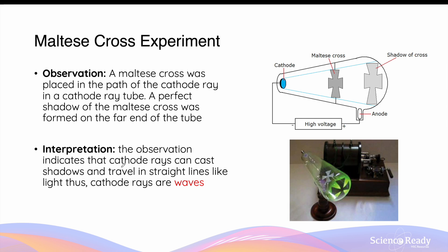This observation indicates that cathode rays can cast shadows and travel in a straight line just like light, and since light is a wave, they hypothesize that cathode rays are also a wave in nature.